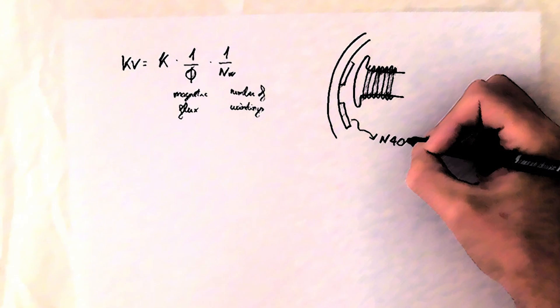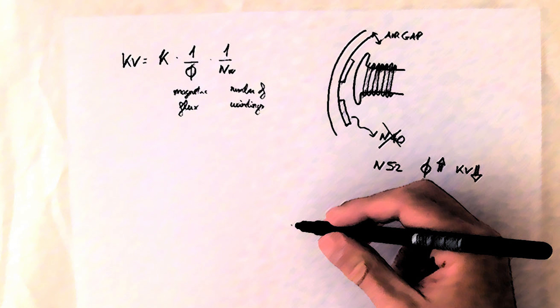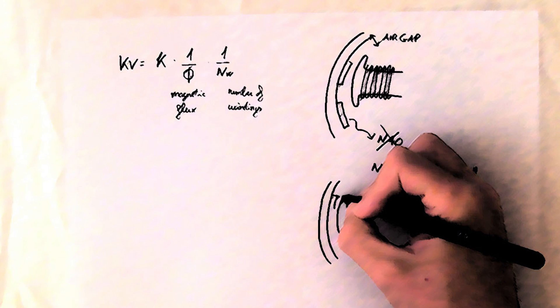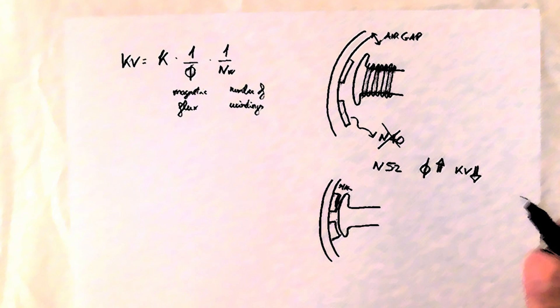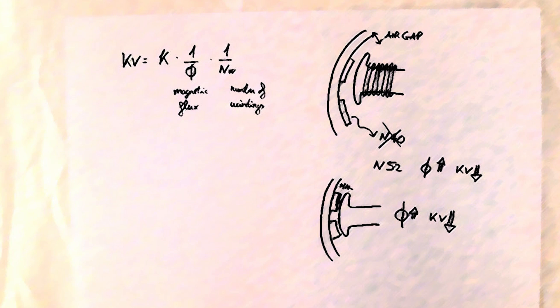For example, if we use more powerful magnets, we increase the magnetic field, but the KV goes down. The same happens when we tighten the air gap, which is the space between the magnets and the magnetic poles. Since the air is not a good magnetic field conductor, we are increasing the magnetic field, and this also makes the KV go down.